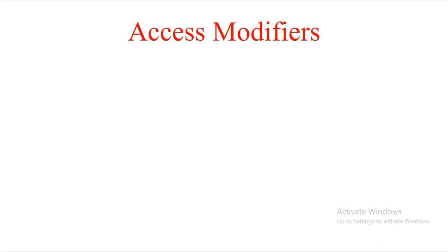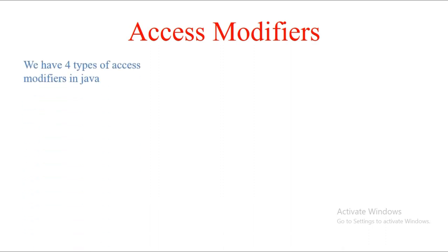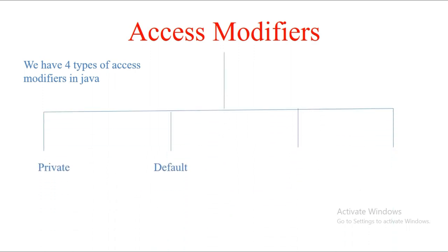Hi guys, welcome to Code Decode. Today we are going to cover the topic of access modifiers. In Java, we basically have four types of access modifiers: private, default, protected, and public.